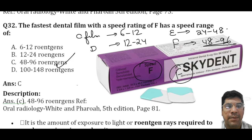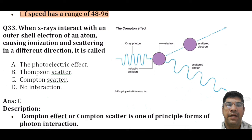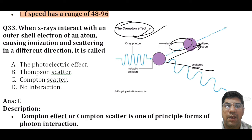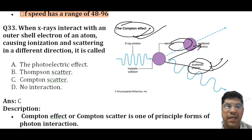When x-rays interact with the outer shell electron of an atom, causing ionization and scattering in different directions — that is the Compton effect. The Compton scatter occurs when the photon interacts with a free electron or loosely bound valence shell electron; energy is transferred to the electron and the photon is scattered in a different direction. In the photoelectric effect, the interaction occurs with bound electrons, whereas Compton involves interaction with free electrons.